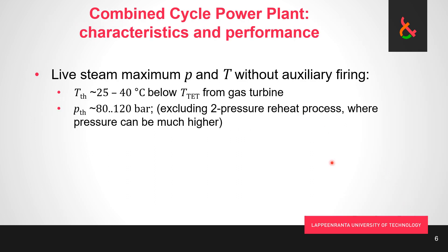Finally, the temperature difference at the flue gas entry point, where superheated steam exits the heat recovery steam generator, is typically around 25 to 40°C. How much superheat we can achieve in the superheater depends on what temperature of flue gas we are getting from the gas turbine. Some tens of degrees — again, much much smaller temperature differences than in the steam boiler where combustion produces hundreds of degrees.